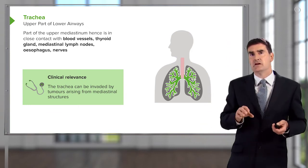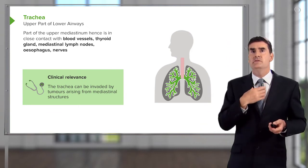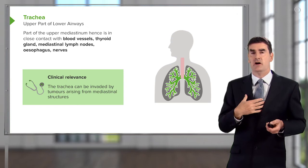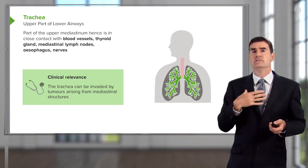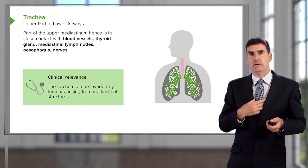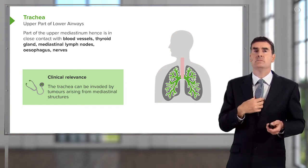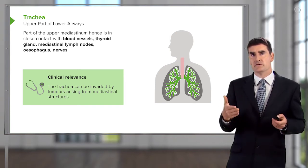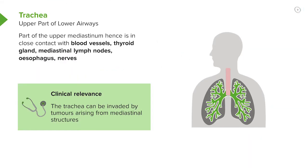The important thing about the trachea is that because it's running through the mediastinum — the structures between the right and the left lung — it's running next to blood vessels, the thyroid gland, mediastinal lymph nodes, the esophagus, and a variety of nerves. That makes it at risk from any problems affecting those structures also affecting the trachea. For example, it's not uncommon for very large mediastinal nodes to cause partial obstruction of the trachea.